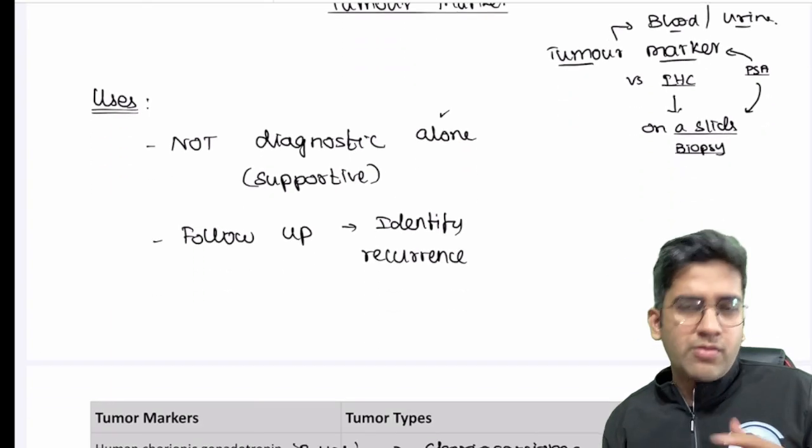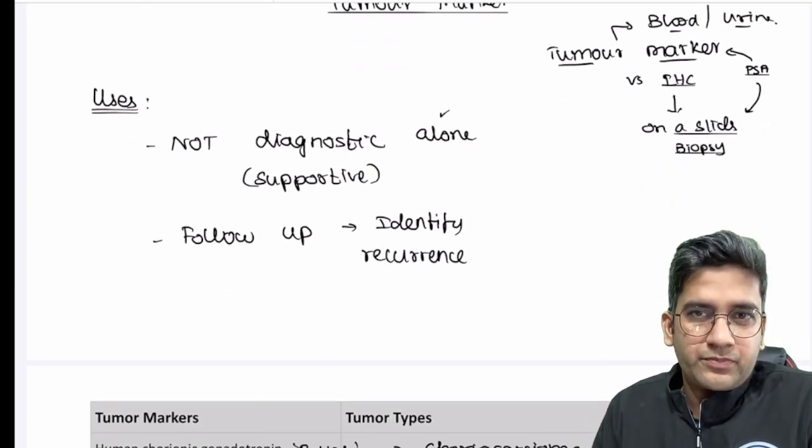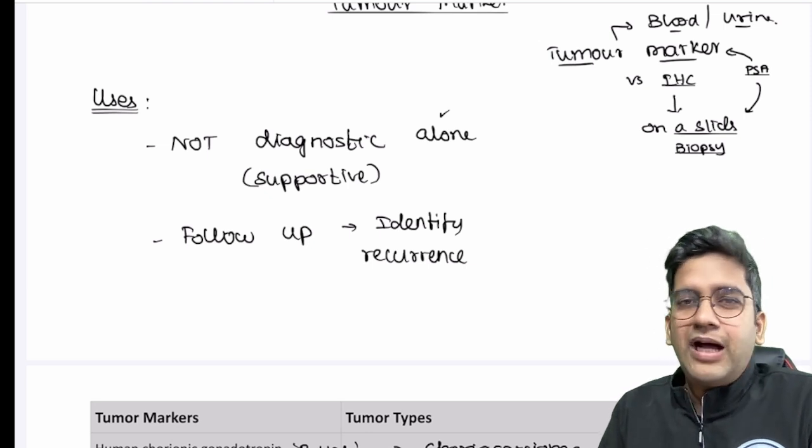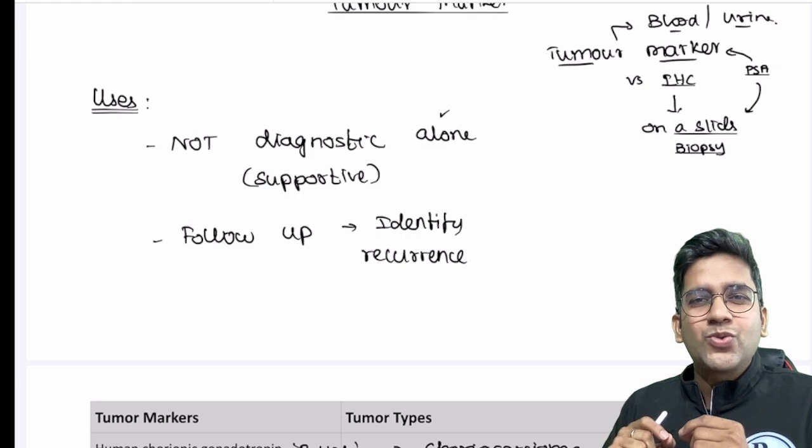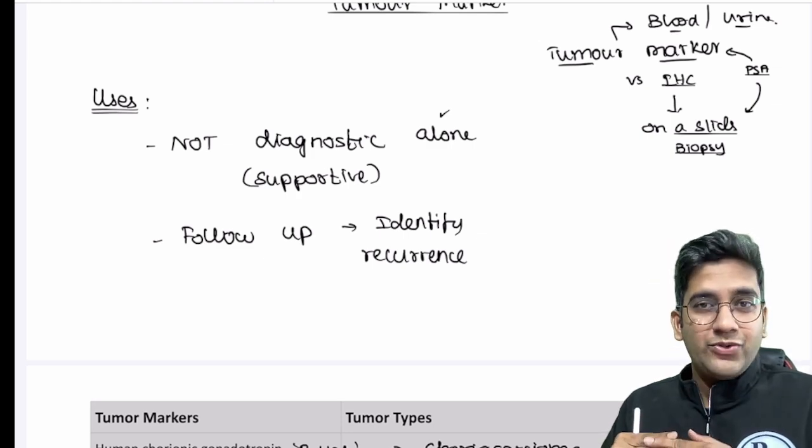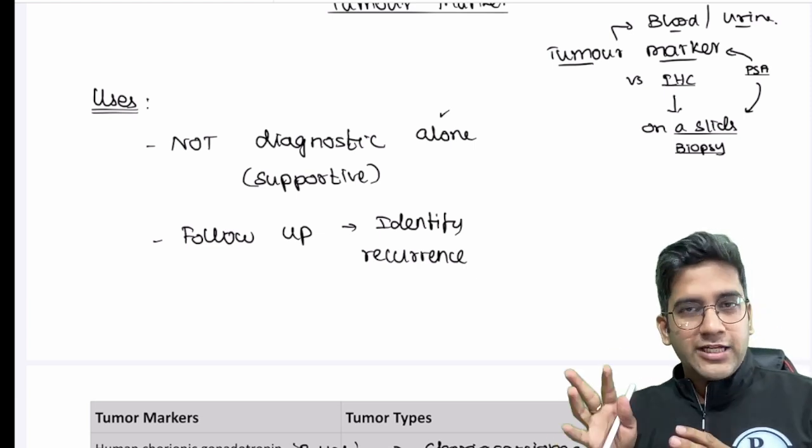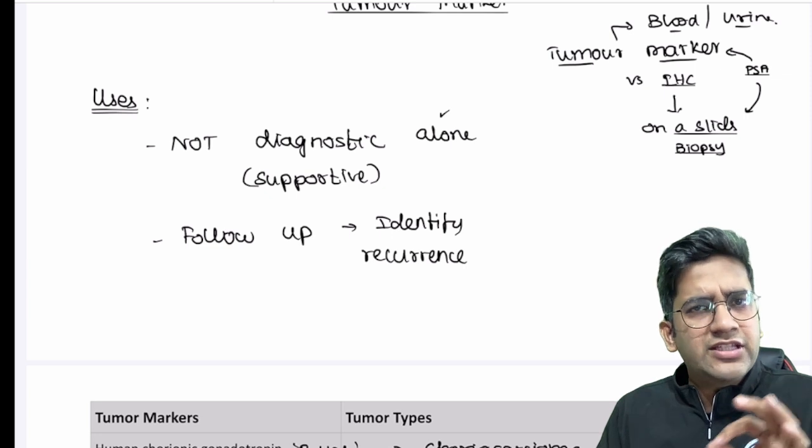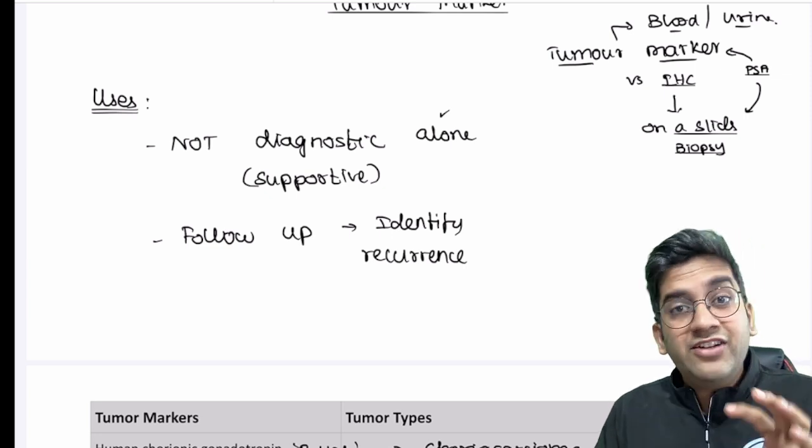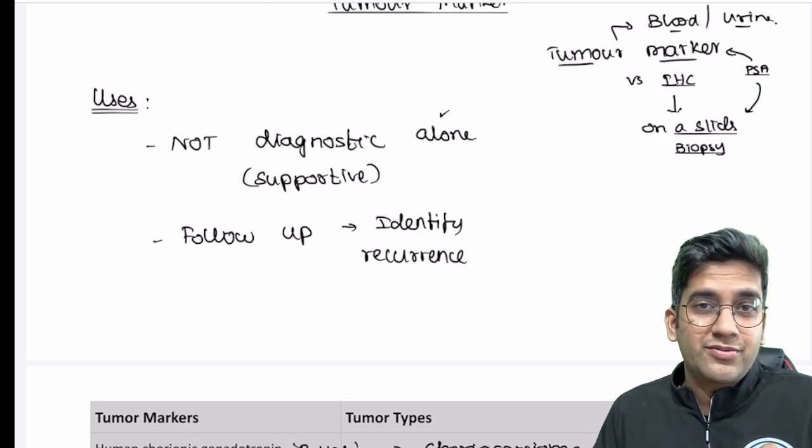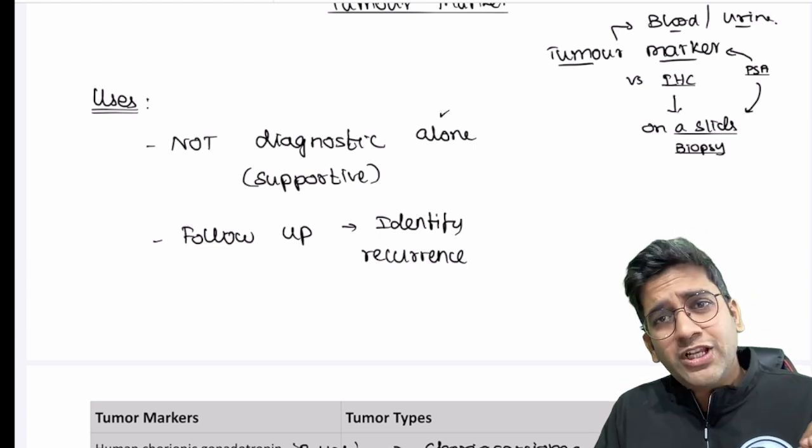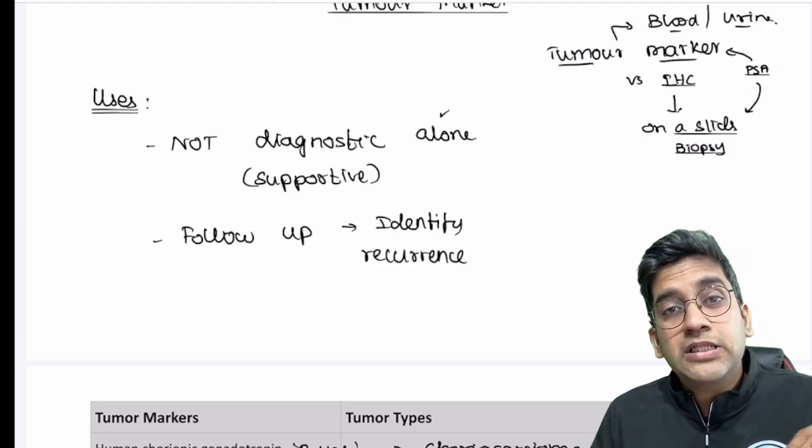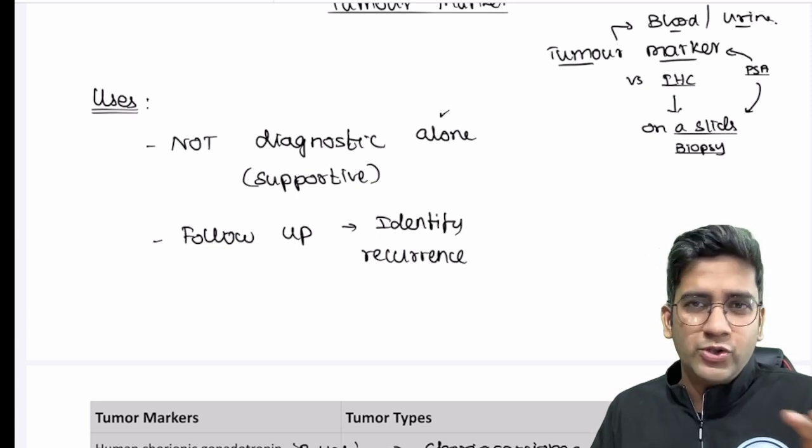Now, since we know what's the difference between tumor marker and IHC, let's see what can be the use case. Definitely tumor marker alone is not diagnostic. It does have its own fault. It will always be a supportive diagnosis. A PSA of 20 is definitely higher but I cannot say the patient is suffering from prostate cancer just based on that. A CA-125 which is seen in epithelial tumor ovary, let's say 150-200 is definitely high but it's also elevated in endometriosis, a benign condition. Same PSA is also elevated in benign prostatic hyperplasia, BPH. So that's why tumor marker can never be 100% diagnostic alone. It's definitely a supportive diagnosis for sure.